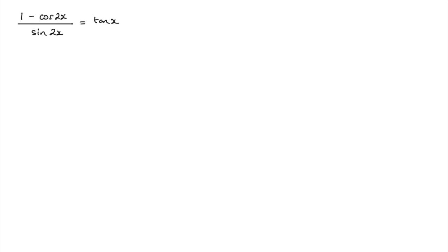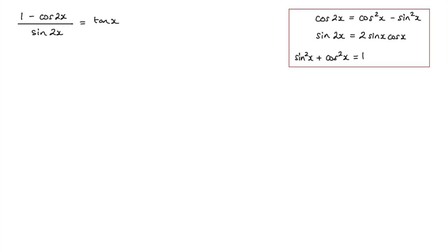Now what we're going to make use of here are the double angle formulas, and also the fact that sine squared x plus cos squared x is equal to 1. So what we'll do is take this left hand side here: we have 1 minus cos 2x and that's over sine 2x.